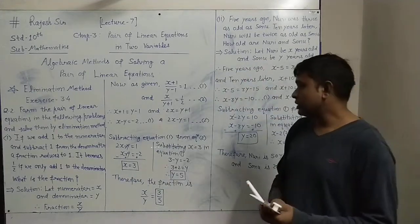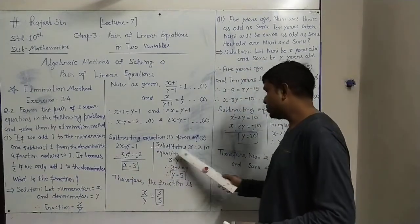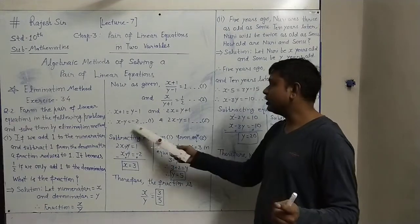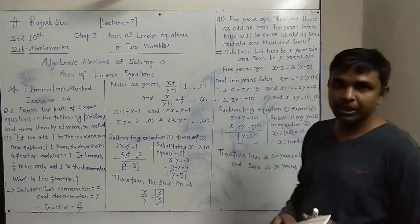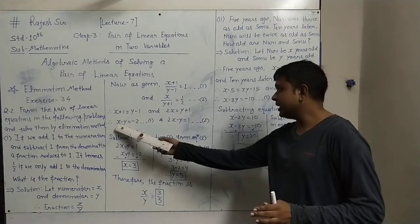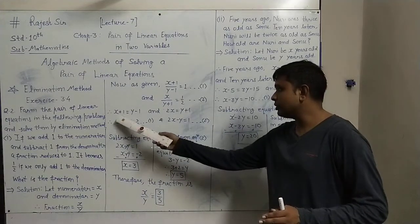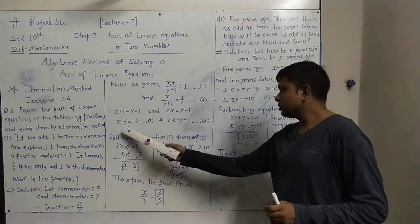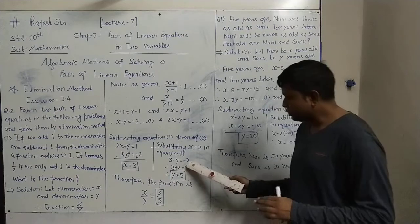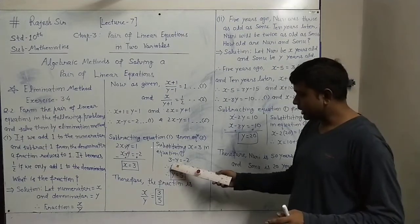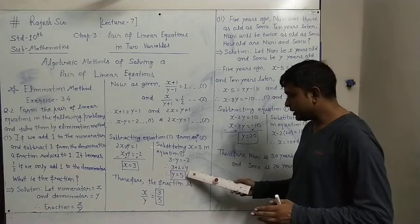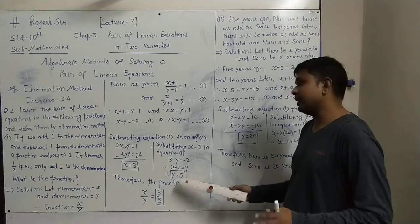Now substituting x = 3 into equation 1: x − y = −2 becomes 3 − y = −2. So 3 + 2 = y, therefore y = 5.